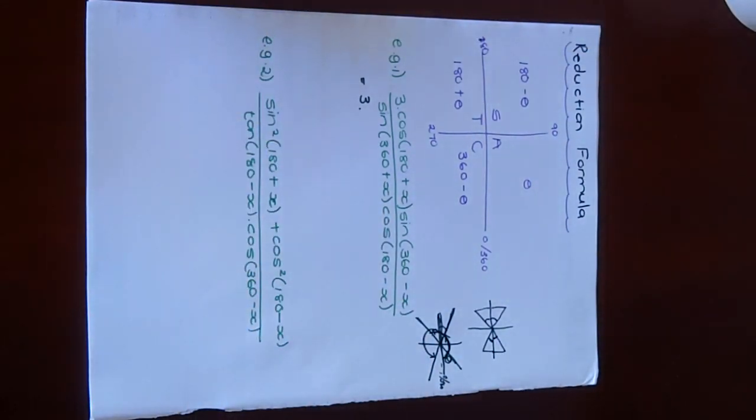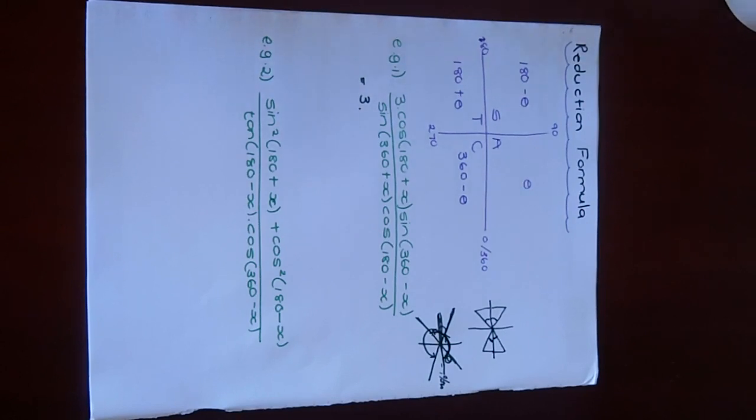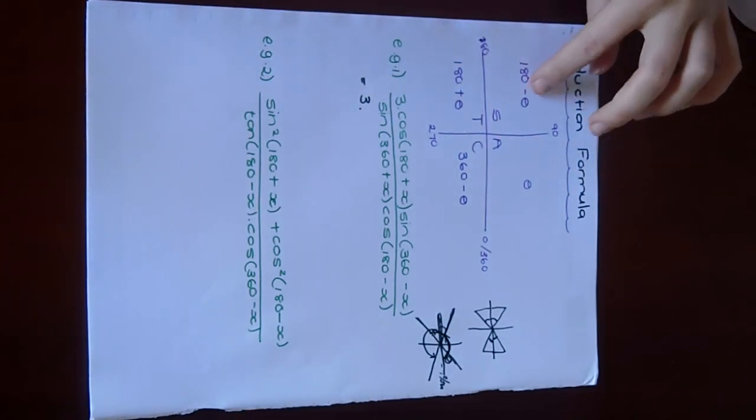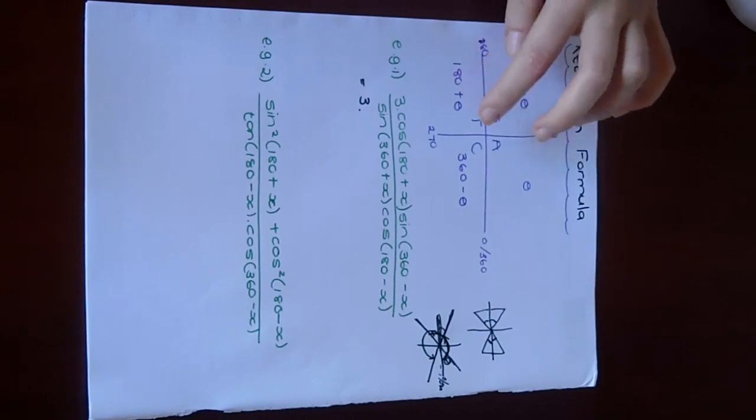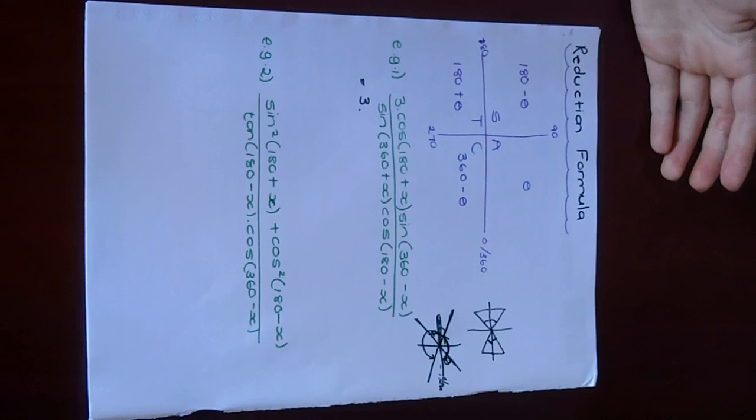If you guys want, I'll make another video explaining that nicely, because I feel like I'm rushing. Once you've drawn your diagram and you fill in the important things, so 180 minus theta, 180 plus theta, 360 minus theta, you'll now be able to see where it is.